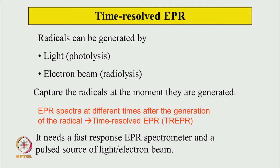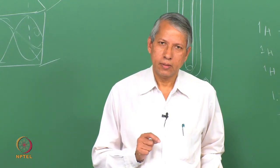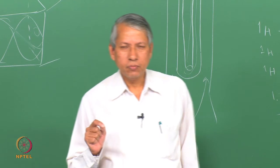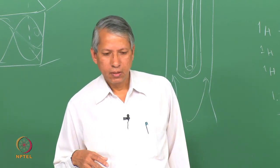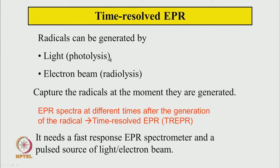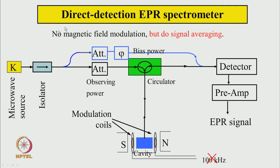Finally, we quickly go through time-resolved EPR spectroscopy, where we try to capture the EPR spectrum of a radical right at the time of its formation, before it reacts. For this, a pulsed laser or electron beam is used and spectra are detected at different times after radical generation — hence the name time-resolved EPR. It requires a fast-response EPR spectrometer and a pulsed light or electron source. We use direct detection — simply getting the output from the preamplifier — and improve the signal-to-noise ratio by signal averaging.